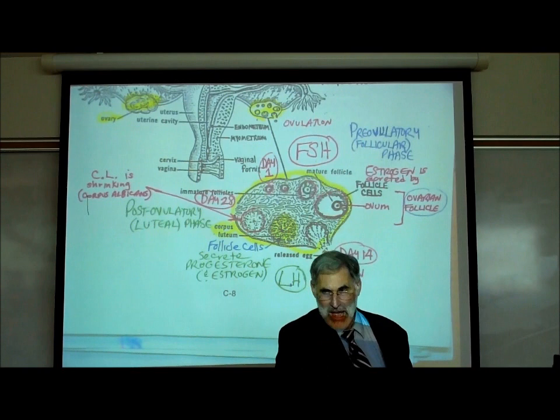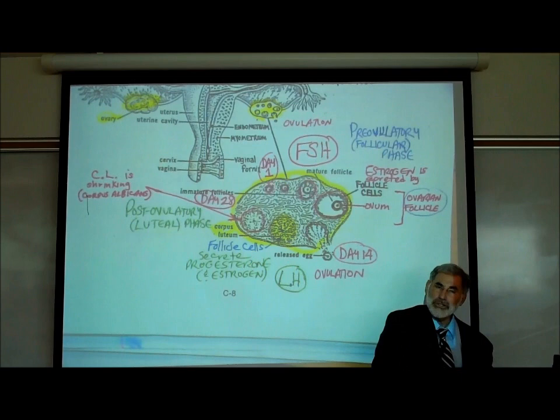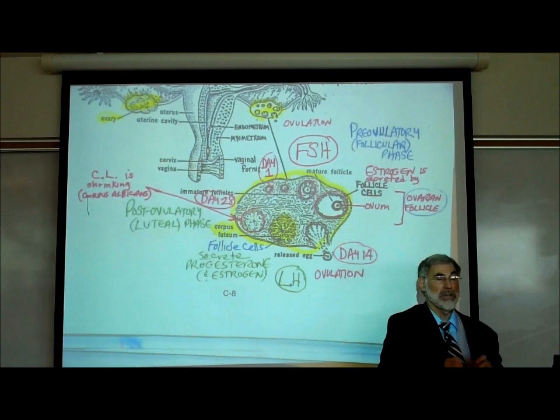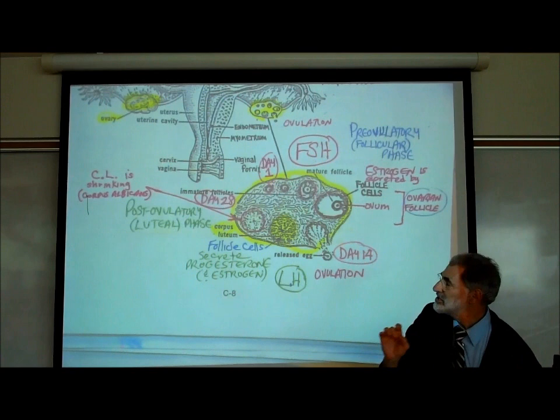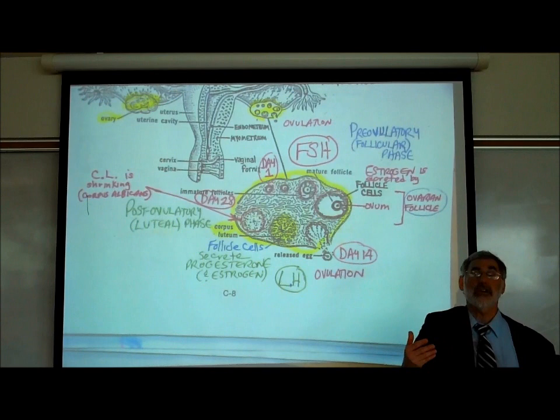We reviewed what estrogen and progesterone do back in section A, page A11. Estrogen is the feminizing hormone. Progesterone — 'pro-gest' as in gestation — means to prepare for pregnancy. It's the hormone that prepares a woman's body for pregnancy. The main thing it does is cause growth of blood vessels in the endometrial lining. After ovulation, the woman's body starts preparing in case the egg is fertilized.